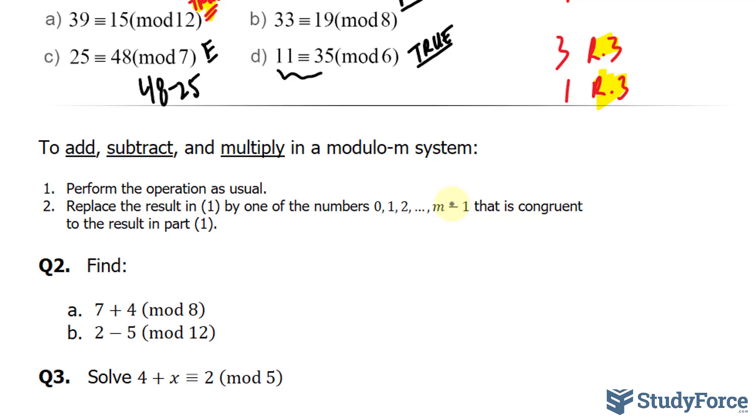So in question 2, we have to find 7 plus 4 using a modulus of 8. 7 plus 4 is 11. The number 8 fits into 11 once with a remainder of 3. Therefore, the solution to question A is 7 plus 4 is congruent to 3. And don't forget to write down mod 8 next to it.